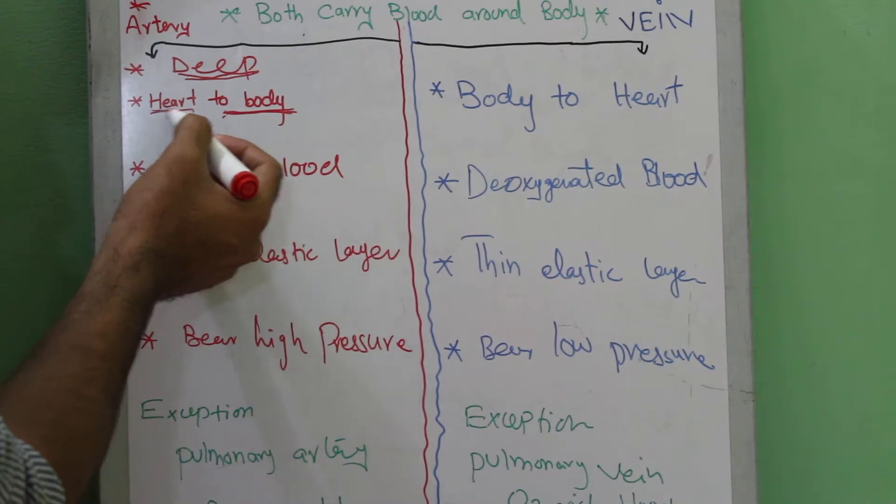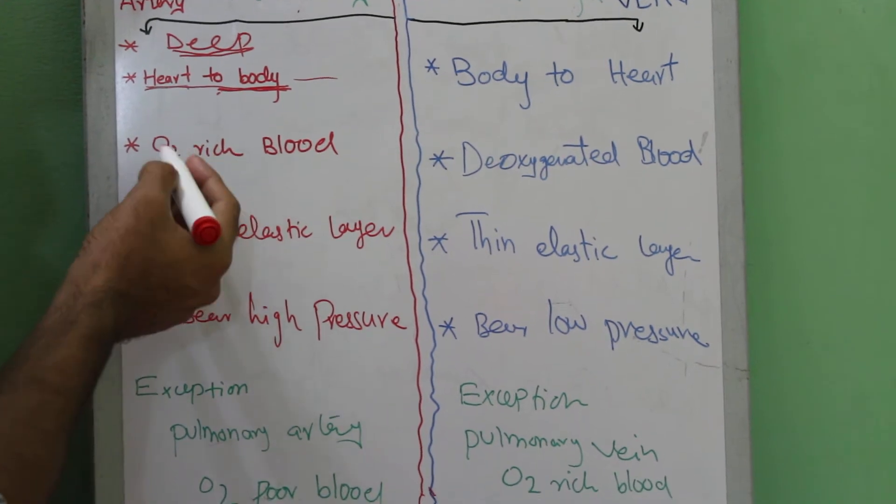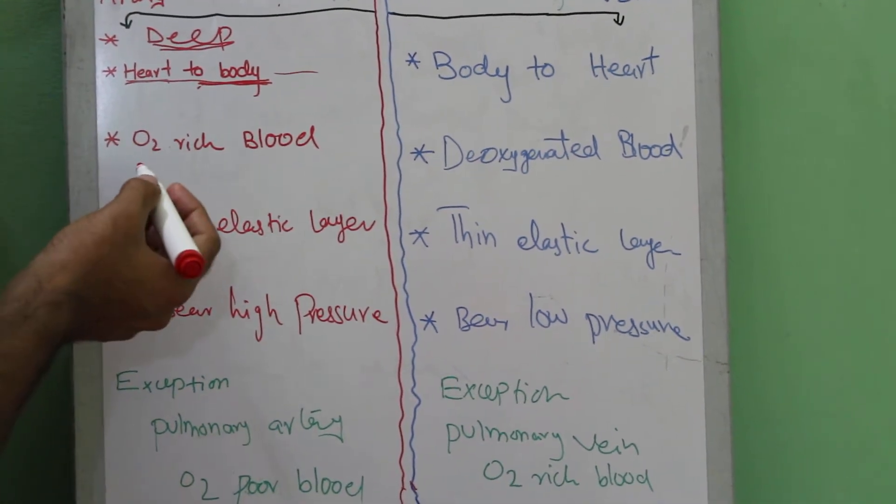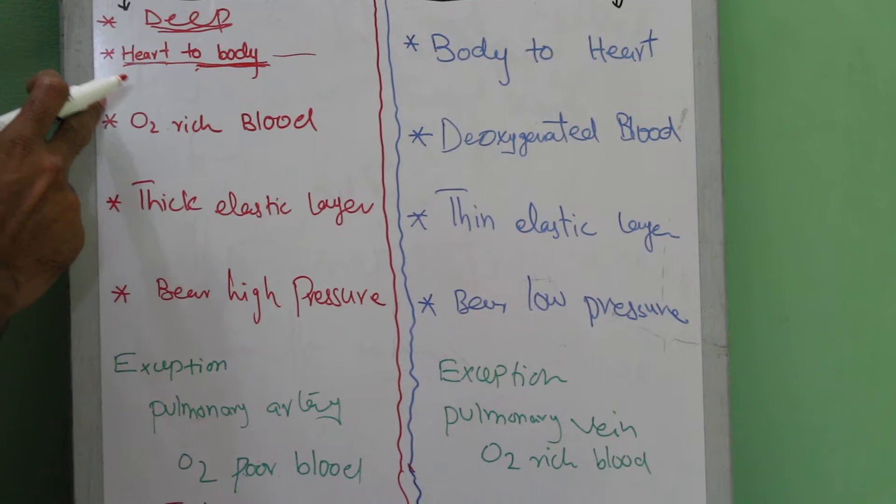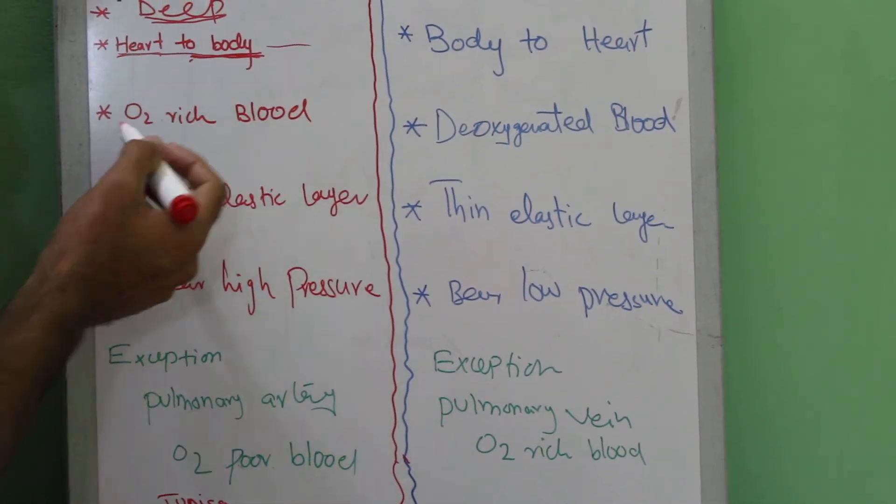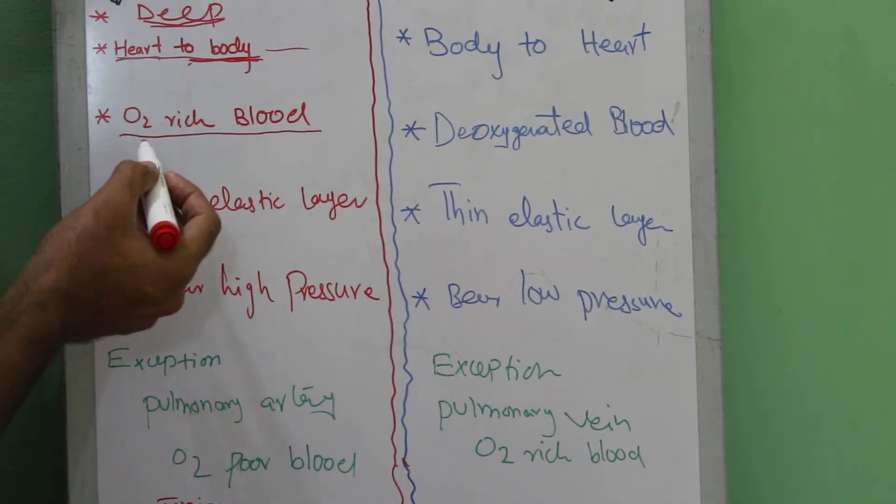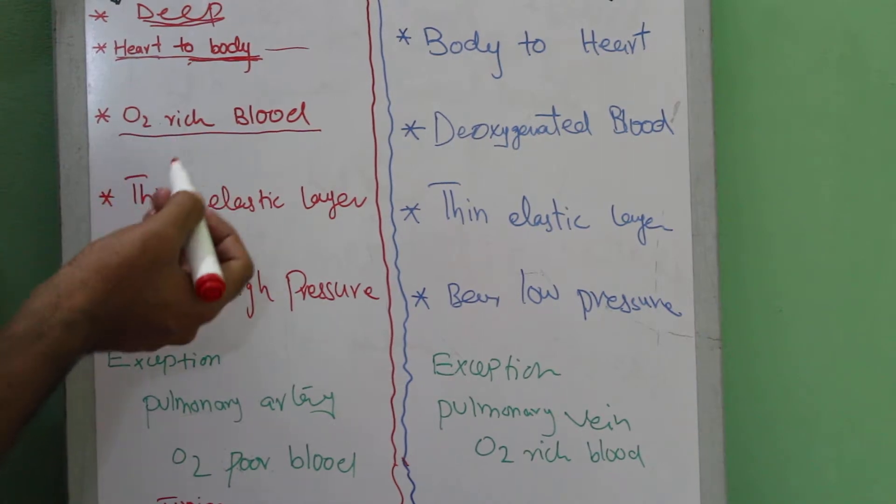The second difference is the arteries have high oxygen. The arteries are filled with high oxygen and transport oxygen from the heart to the periphery of the body.